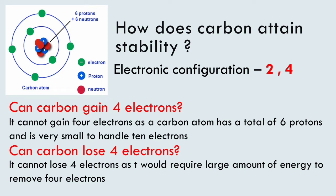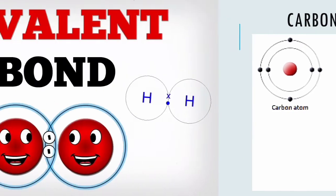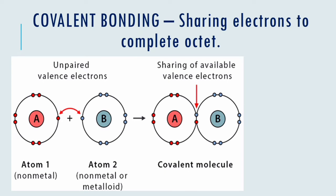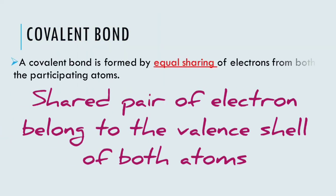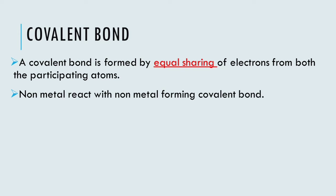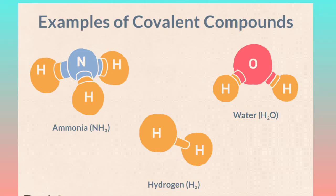Carbon attains its stability by sharing its valence electrons with other atoms of carbon or with atoms of other elements. Not just carbon, but many other elements form molecules by sharing electrons in this manner. When an atom shares its electron with another atom, a bond is formed between those two atoms. The bond formed between atoms by sharing of electrons is known as covalent bonding. In covalent bond formation, sharing of electrons is mutual and equal, and the shared pair of electrons belong to the valence shell of both the combining atoms. A non-metal reacting with a non-metal forms covalent bonding, and compounds formed through covalent bonding are known as covalent compounds.